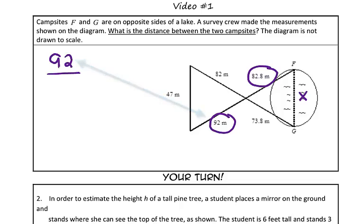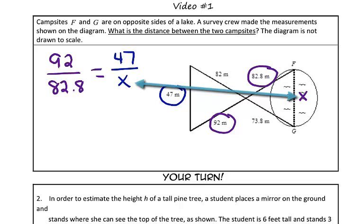92 over 82.8 should be equal to 47, which corresponds with X. To solve this, we're going to cross multiply.